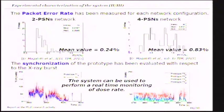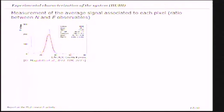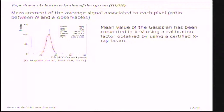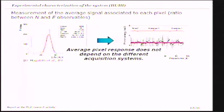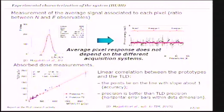The system can be used to perform real-time monitoring of the absorbed dose. I studied the average signal associated to each pixel above threshold by considering the ratio between the two observables — energy and number of pixels. By considering the mean value of the distribution, we convert it to photon energy. As a function of different interventional radiology procedures, the mean value associated to each pixel above threshold is constant and does not depend on the acquisition system, so the sensor performances are not affected by the acquisition system.